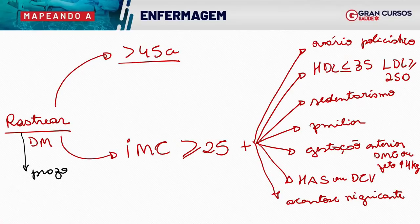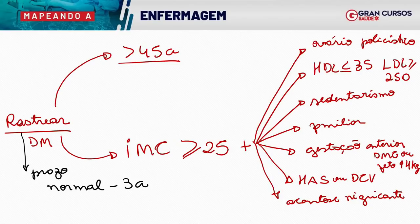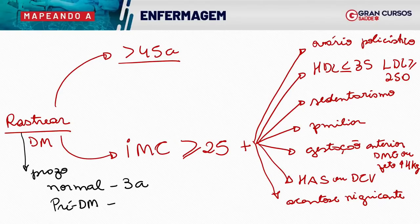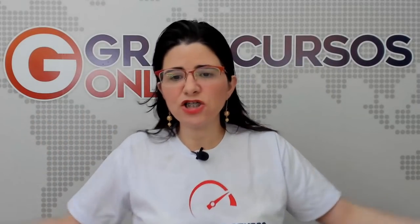O prazo do rastreamento, que é novo do PCDT de 2020: se der normal, o acompanhamento é a cada três anos. Se der pré-diabetes — jejum de 100 a 125, teste de tolerância de 140 a 199 — rastrear de forma anual. Se deu diabetes, é diagnóstico e vai para tratamento. O rastreamento sequencial só continua se não deu diabetes: normal a cada três anos, pré-diabetes anualmente.